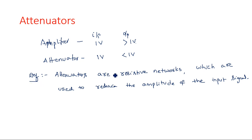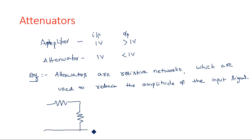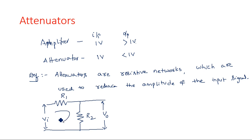Attenuators are made up of pure resistors and the purpose is to reduce the amplitude. Now let me draw a circuit — a pure resistor network, which we can call a basic or standard attenuator. We have one resistor R1 in series and a second resistor R2. We are applying the input voltage Vi, and across R2 we are taking the output voltage V0. Some current I is flowing through this circuit. By looking at the circuit, you may get the idea of a voltage divider network.